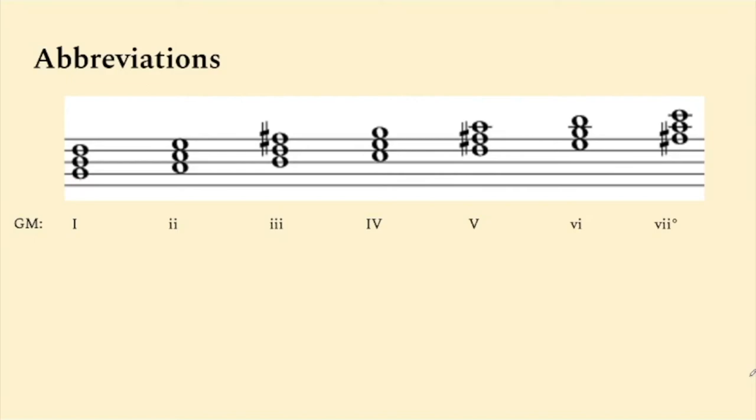This is the case for all major scales. The IV chord will always be major and the VII chord will always be diminished. With this pattern, you can easily build any major diatonic chord.